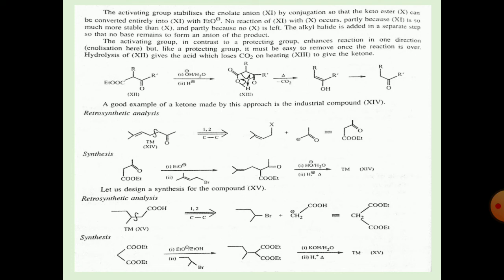The activating group acts as a protecting group to enhance the reaction in one direction, but it must be easy to remove once the reaction is over. Hydrolysis followed by loss of CO2 on heating gives the ketone. The ketone reacts with OH under H+/H2O conditions to form an adduct, then removal of CO2 gives the enol, and the final enolization step gives the ketone.